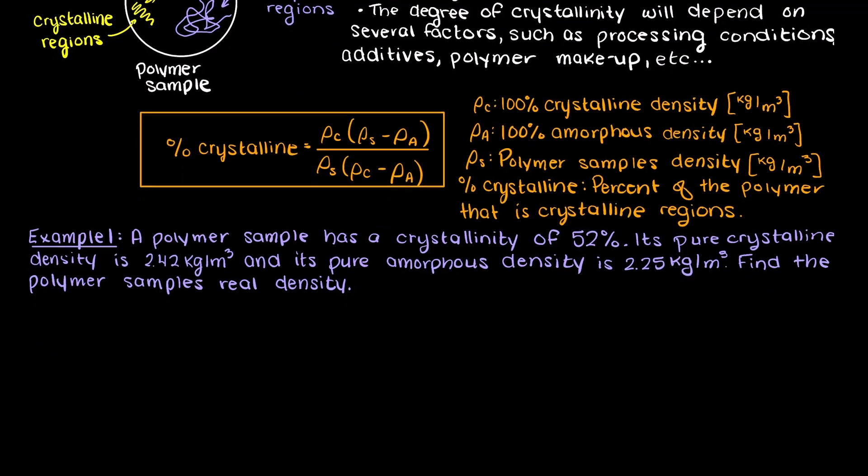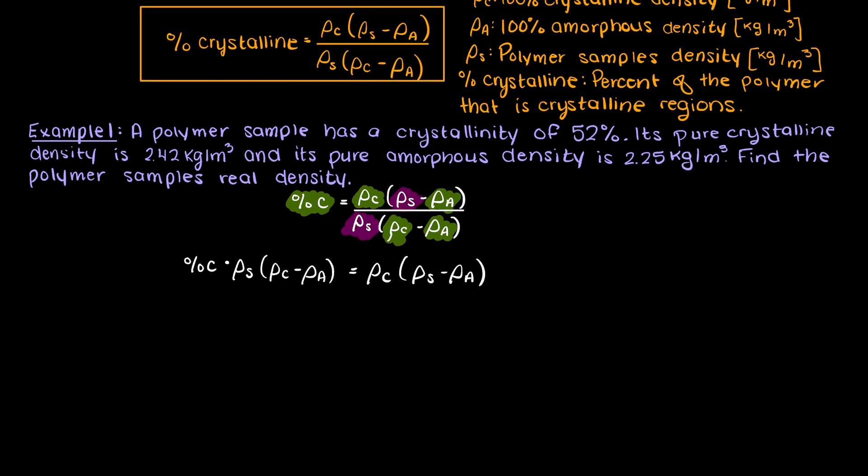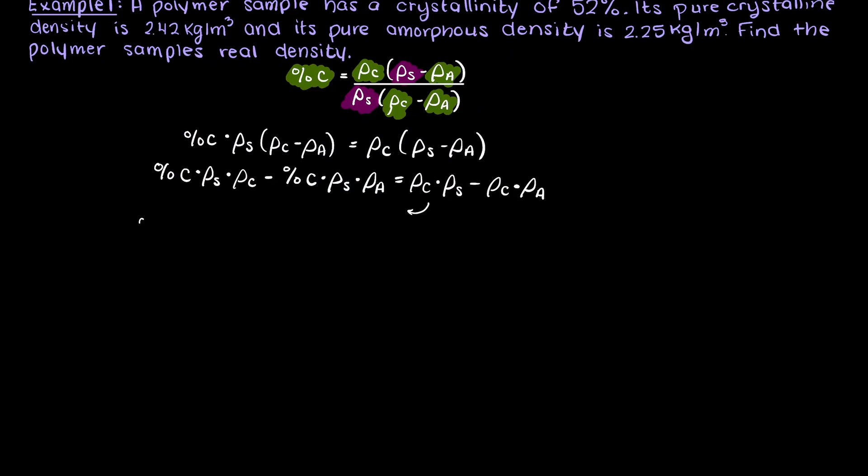Let's write our equation here and determine which variables we need to find and which ones we are already given. Let's highlight all of our variables that we have in green and the ones we are missing in red. We have all the variables that we need except for one, that being the true sample density. Since we only have one variable and one equation, we can now begin rearranging the equation to solve for our unknown variable.